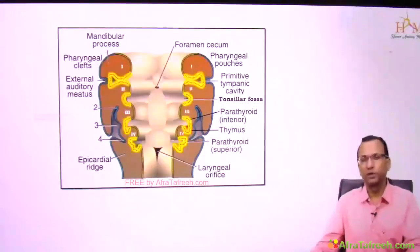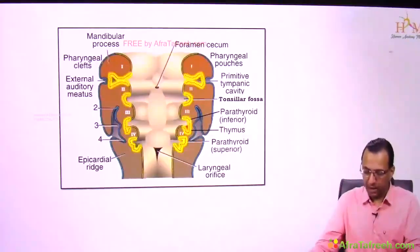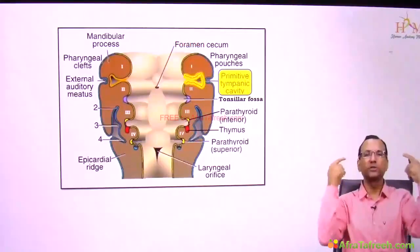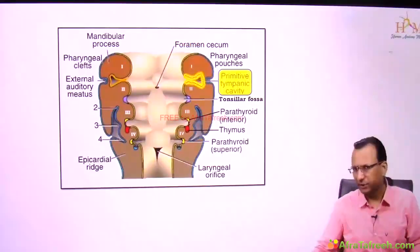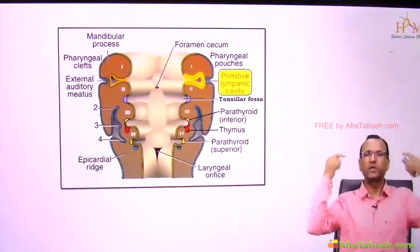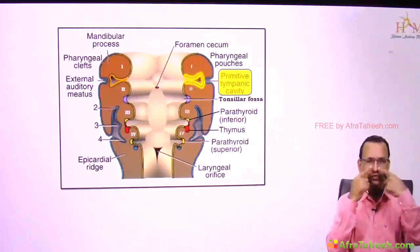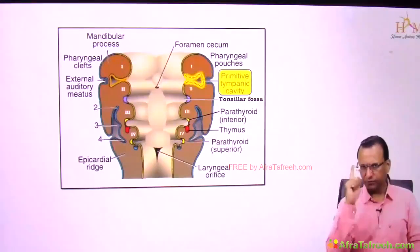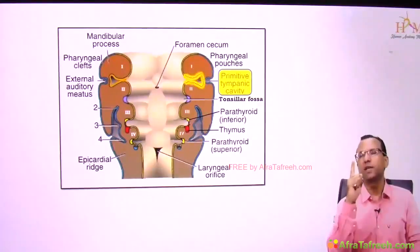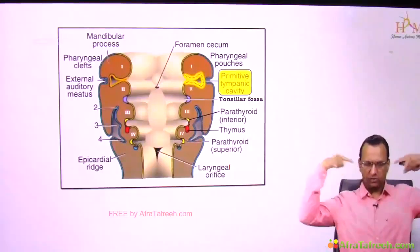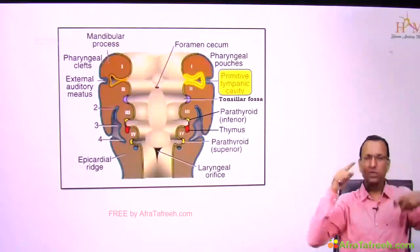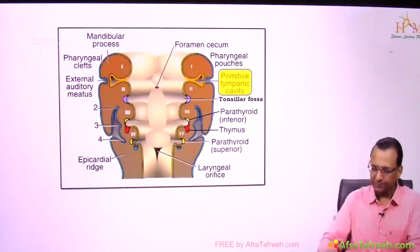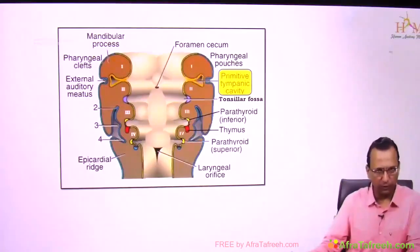Now let's look at what the pouches are doing. Pharyngeal pouch 1 will form the middle ear cavity and also the Eustachian tube, which opens into the nasopharynx. The epithelium of the middle ear cavity and Eustachian tube is endoderm from pouch 1.